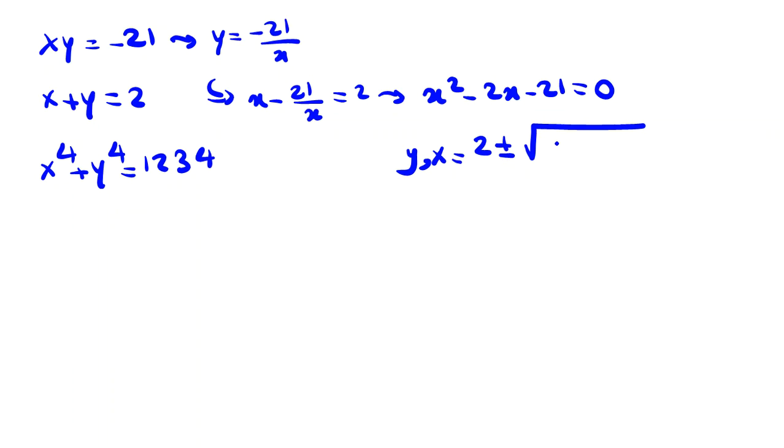B squared minus 4ac over 2a. So it will be 2 plus minus root 88 over 2. So it will be 1 plus minus square root of 22.